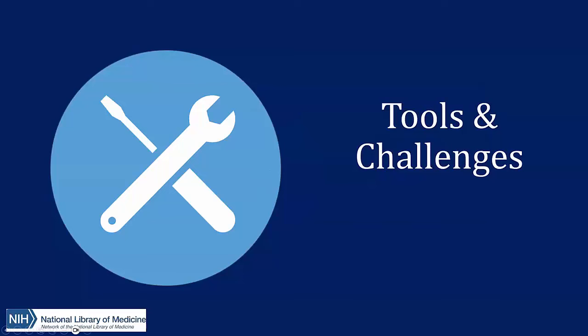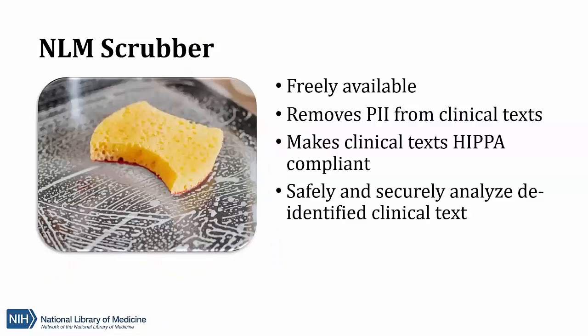Now we're going to move on to talking about the different tools available to help with de-identification. The main tool we're going to talk about today is NLM Scrubber, developed by the National Library of Medicine. It's an NLP — a natural language processor — designed to identify PII such as names, locations, ages, and social security numbers. It finds that information, redacts it, and then replaces it with generic terms. Scrubber can be used to make clinical text data HIPAA compliant, but it's meant to be used on text files only — it doesn't work on images, CSVs, or Excel files.